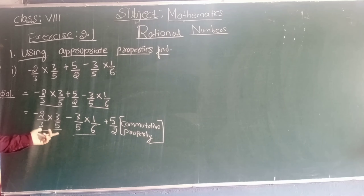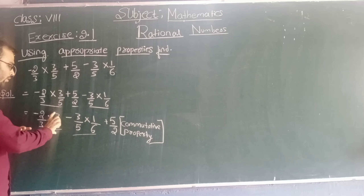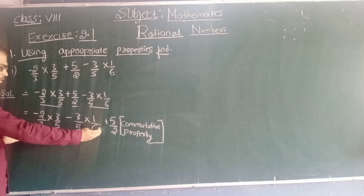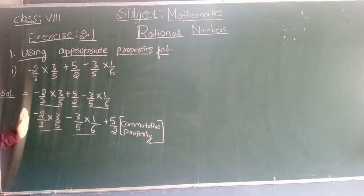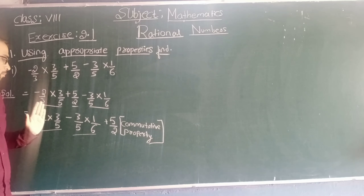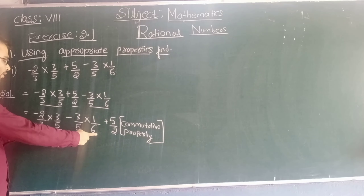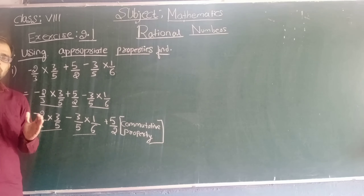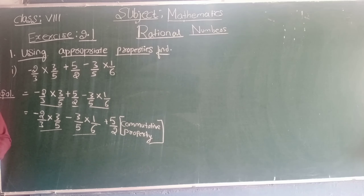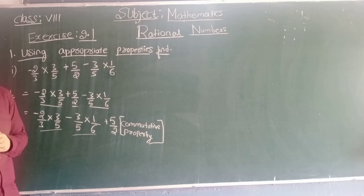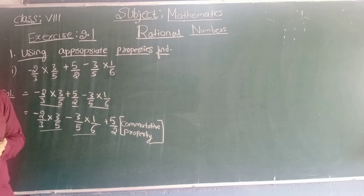These expressions have 3 by 5 as common. It is of the form A into B minus A into C — up to this term here. It is of the form A into B minus A into C. So what is that? It is the distributive property. A into B minus A into C equals A into B minus C — that is the distributive property.